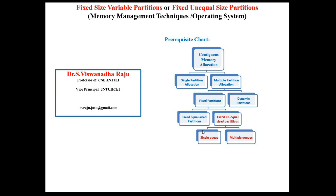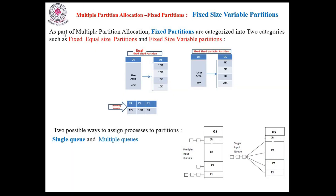In the fixed unequal sized partitions, we will be discussing the strengths and weaknesses of single queue and multiple queue, and why we want to move from single queue to multiple queue. Fixed size variable partitions are a part of multiple partition allocation as shown in the prerequisite chart. Fixed partitions are categorized into fixed equal sized partitions and fixed size variable partitions. Fixed equal sized partitions were explained with examples in previous videos, and now we are focusing on fixed size variable partitions.